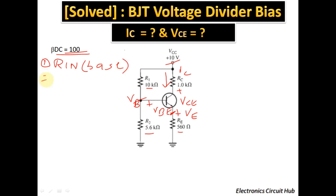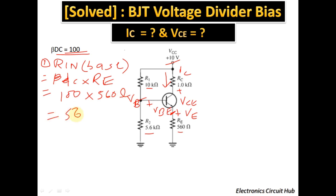The formula to find R_in(base) is: R_in(base) = beta_DC × RE. We know beta_DC = 100 and RE = 560 Ω, so R_in(base) = 100 × 560 = 56 kΩ. The reason we calculate this is because in voltage divider biasing, we need to assess the impact of R2 in parallel with R_in(base).